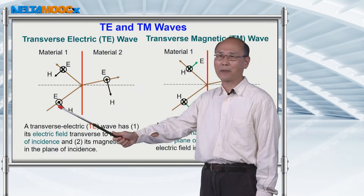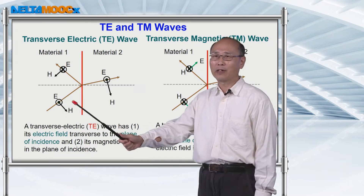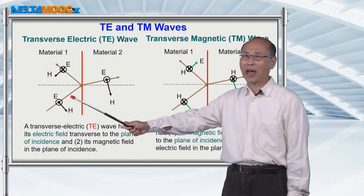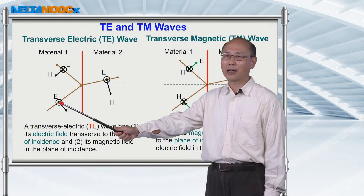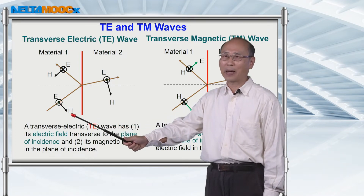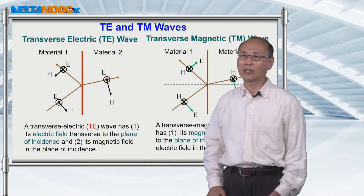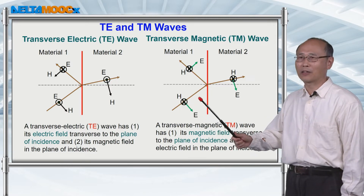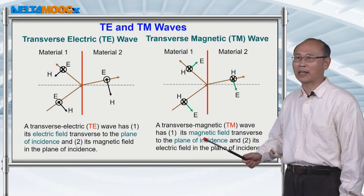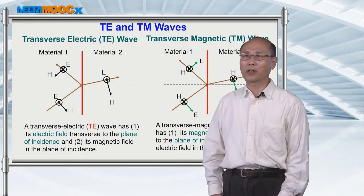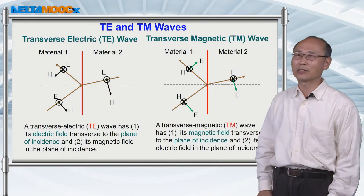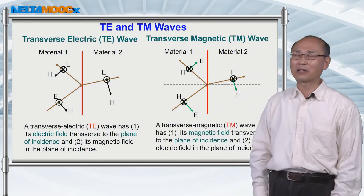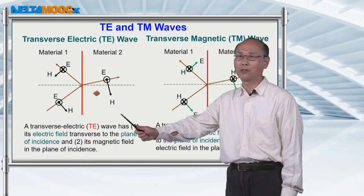Because the electric field and magnetic field have to be perpendicular to the propagation direction of this plane wave, if you have a transverse electric field, then the magnetic field is going to be in the plane of incidence. And vice versa, if you have a transverse magnetic field, then the electric field is going to be in the plane of incidence. We divide the problem into these two categories and find the solutions for oblique incidence onto a conducting boundary.